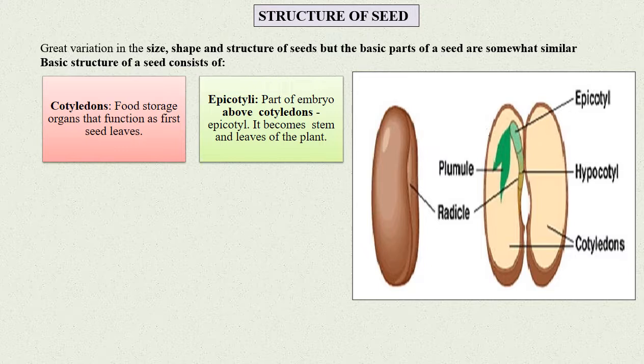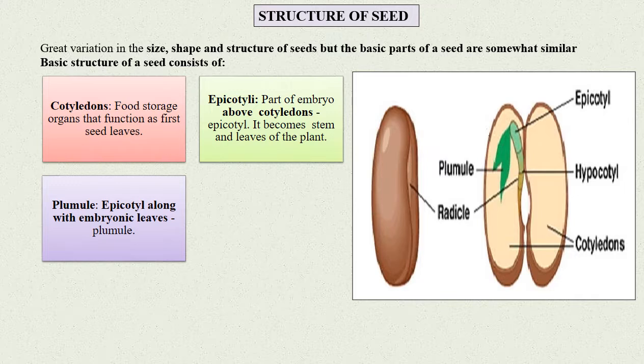Epicotyl: The part of embryo above the cotyledons is called epicotyl. The epicotyl becomes the stem and leaves of the plant. Plumule: The epicotyl along with embryonic leaves is called plumule.